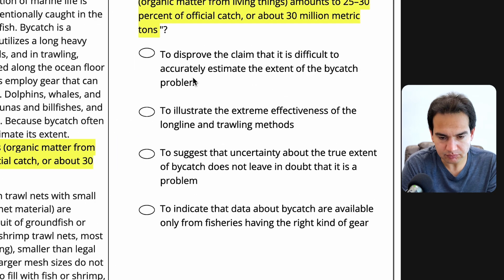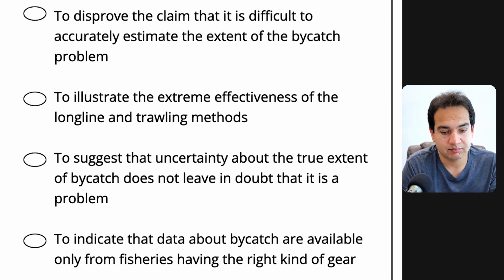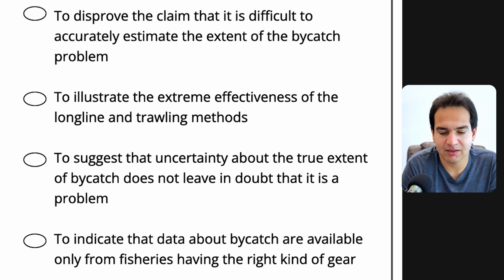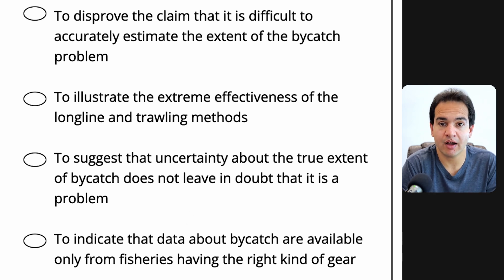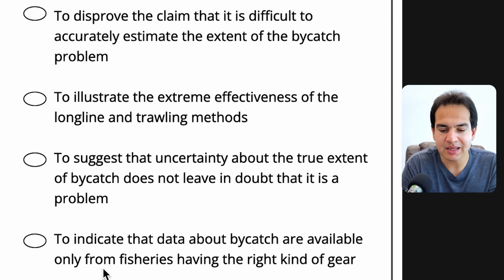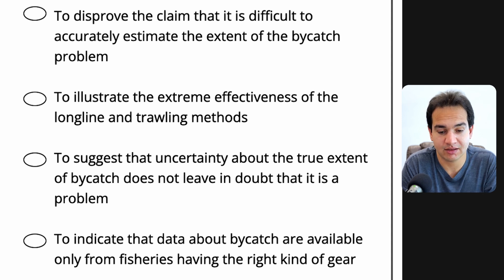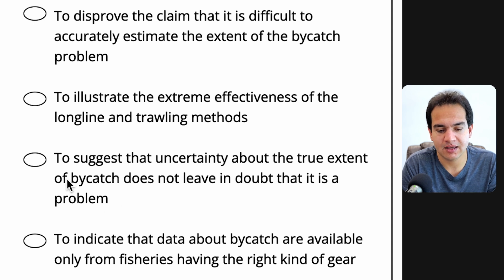Now eliminate answer choices. 'To disprove the claim that it is difficult to accurately estimate the extent of the bycatch problem' — not really; he just said 30 million metric tons from available data, so that's not the reason. 'To illustrate the extreme effectiveness of the long line and trolling methods' — no, that wasn't even there. 'To suggest that uncertainty about the true extent of bycatch does not leave in doubt that it is a problem' — this sounds really good. Yes, there is uncertainty about the size because it's not reported, but that doesn't mean this is not a problem: 30 million metric tons, 25 to 30%. This is the reason why he provided this information. And lastly, 'to indicate that data about bycatch are available only from fishers having the right kind of gear' — no, not at all, this was not even there. So my answer choice is the third one.